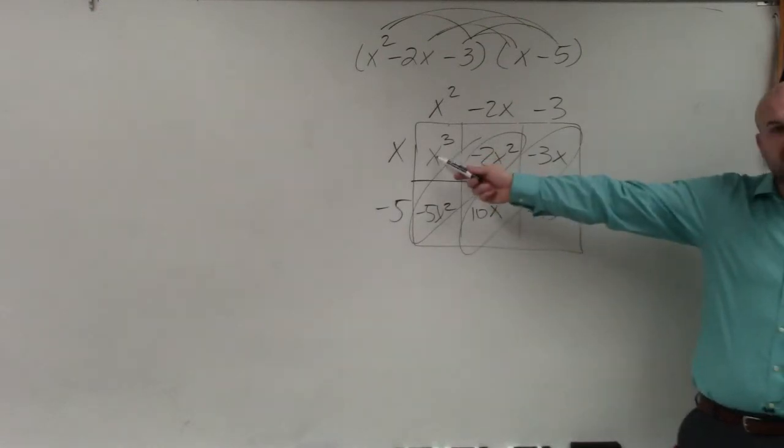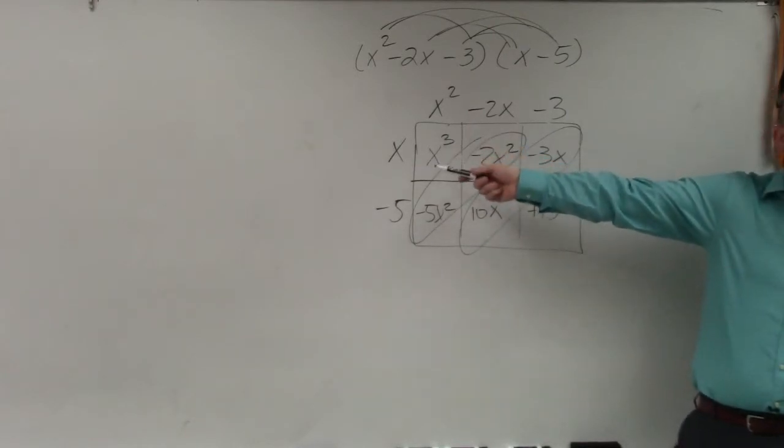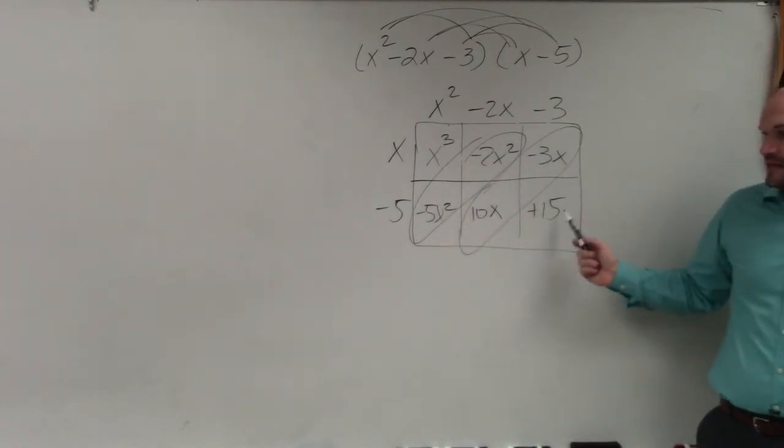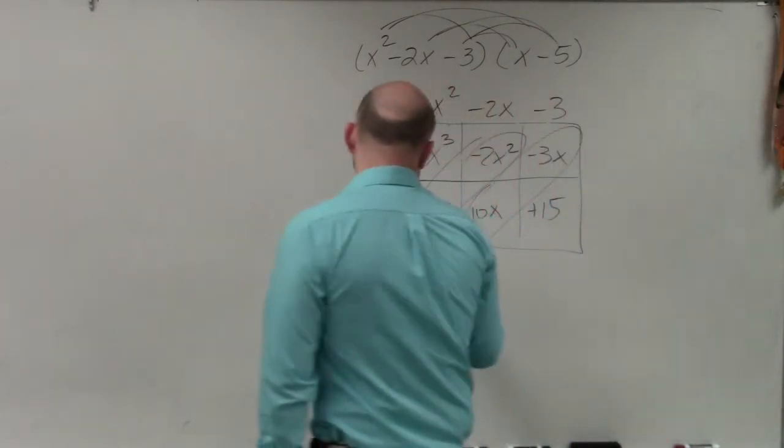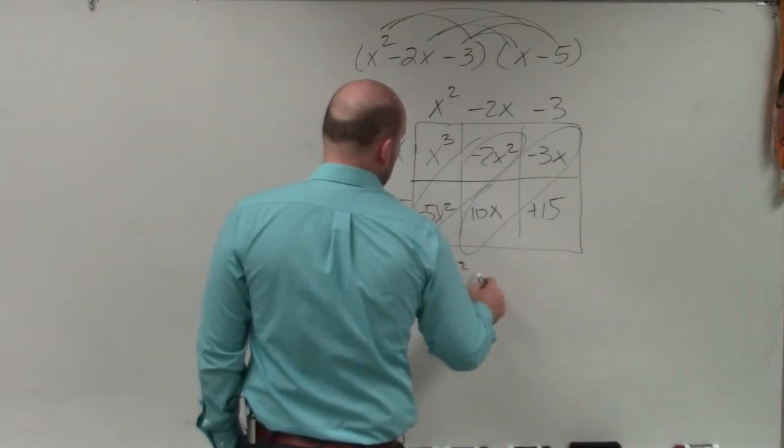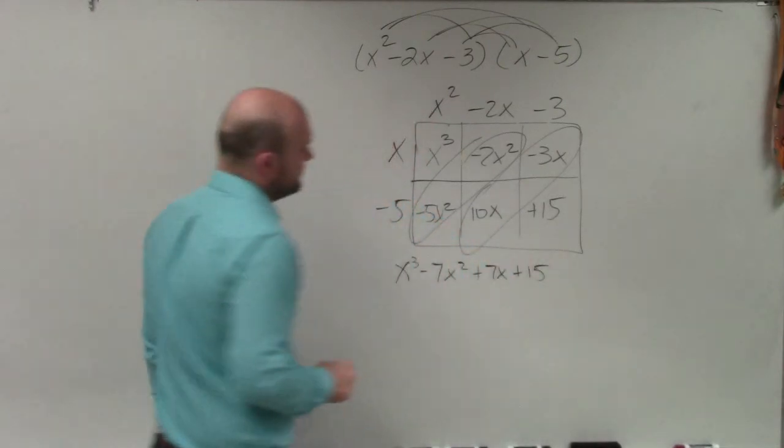So now that's going to be my leading term, which is going to have my degree and leading coefficient, which would be 3 as the degree, 1 as the leading coefficient. Then I combine these terms, combine these terms, and that's my final term. So my final answer is x cubed minus 7x squared plus 7x plus 15.